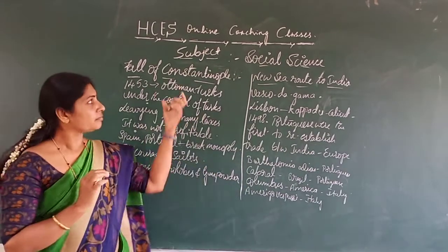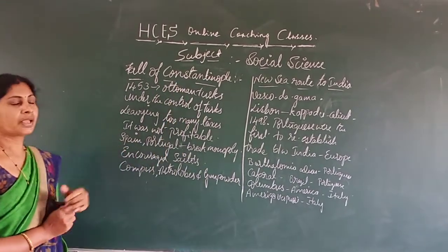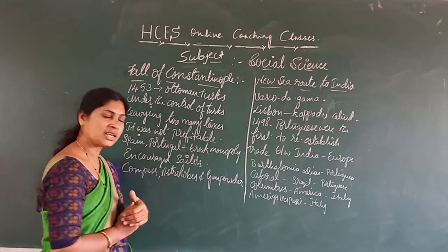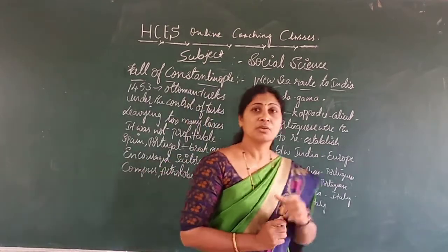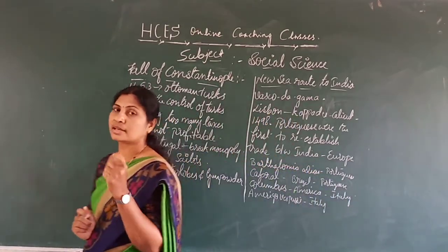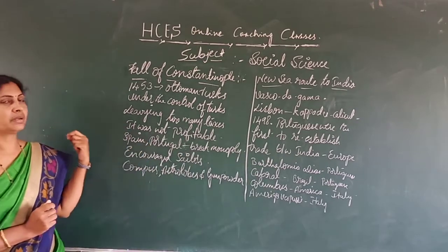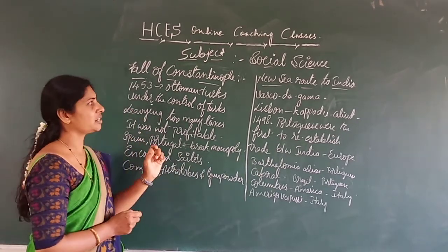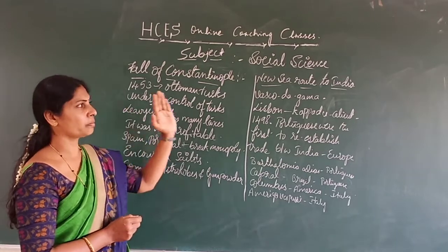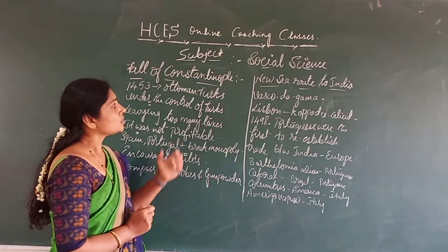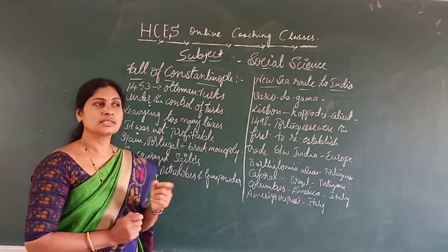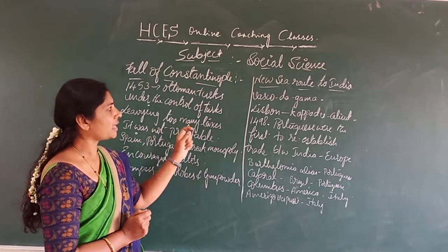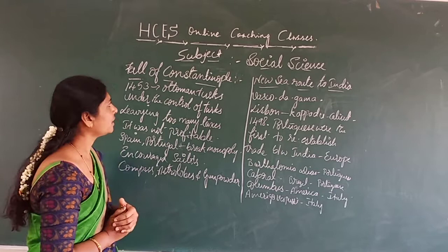Before finding the new sea route to India, the relationship between India and Europe was taking place through land routes. Which was the land route? Actually, the land route was Constantinople. Constantinople was the main center for the trade relation between Europe and Asia, so Constantinople was called the center and gate of European trade.